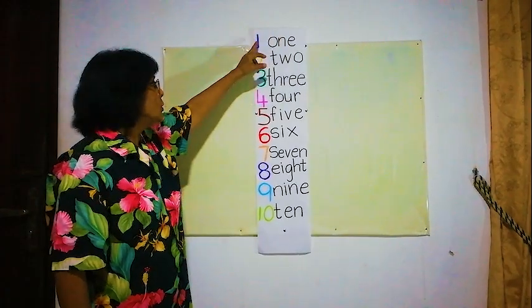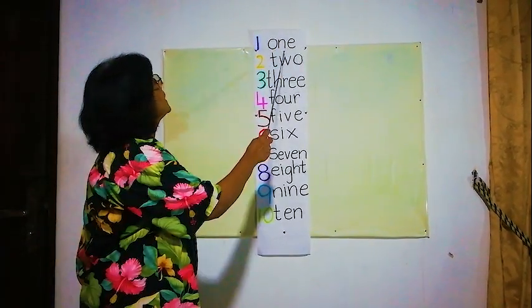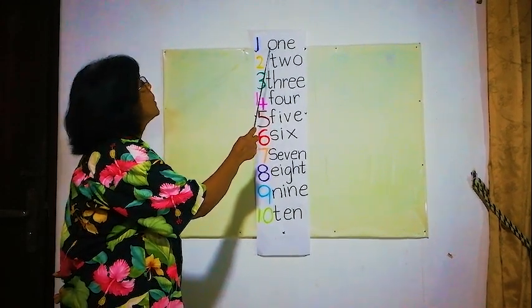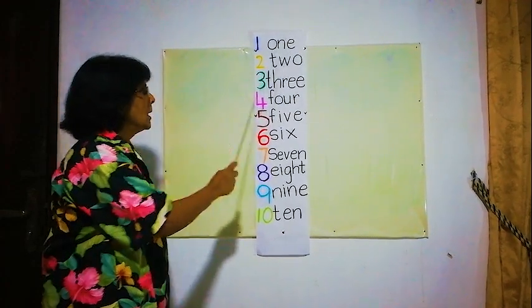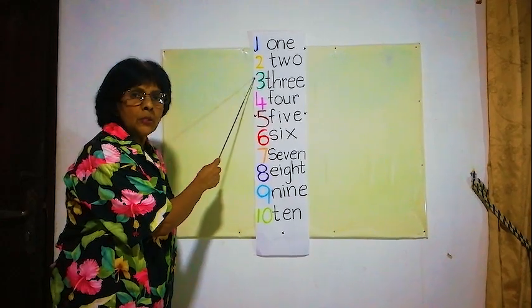Now how do you spell 1? O, N, E, 1. One, O, N, E, 1.